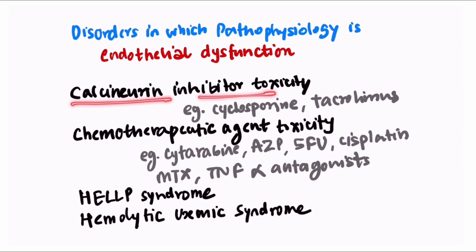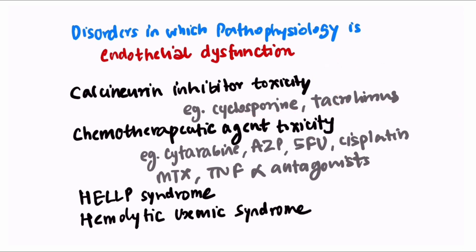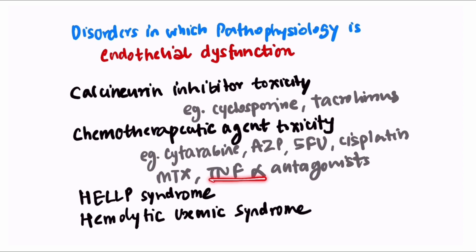Calcineurin inhibitors — for example, cyclosporine or tacrolimus — their toxicity can lead to development of PRESS syndrome. Chemotherapeutic agents that can also lead to PRESS include cytarabine, azathioprine, 5-fluorouracil, cisplatin, methotrexate, and TNF-alpha antagonists. The pathophysiology in all these cases is endothelial dysfunction.